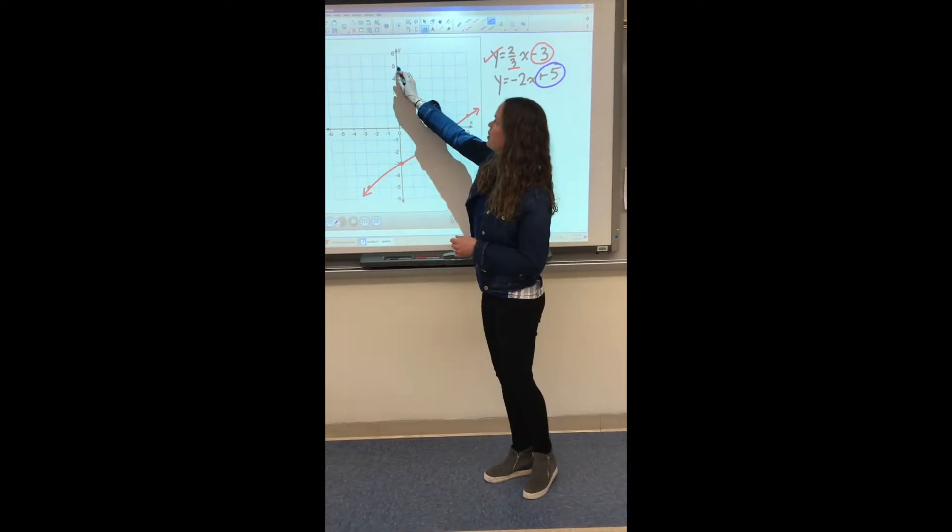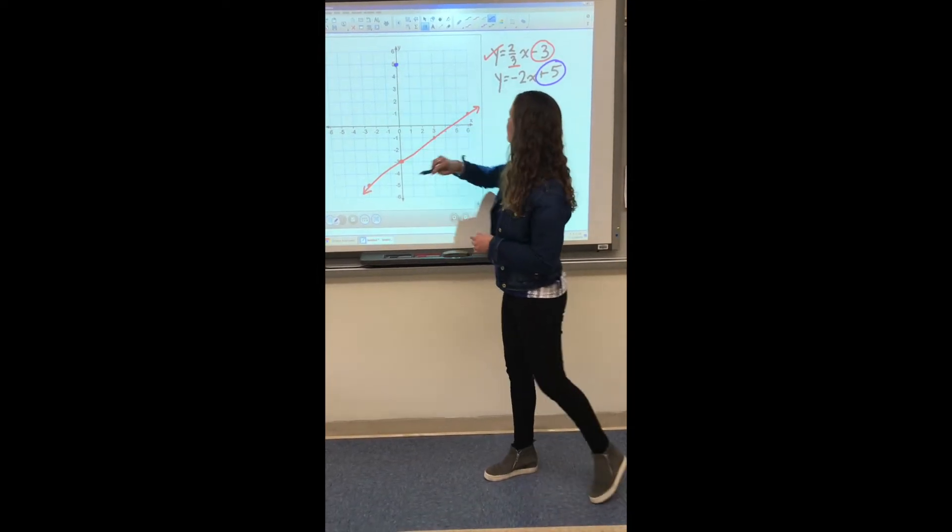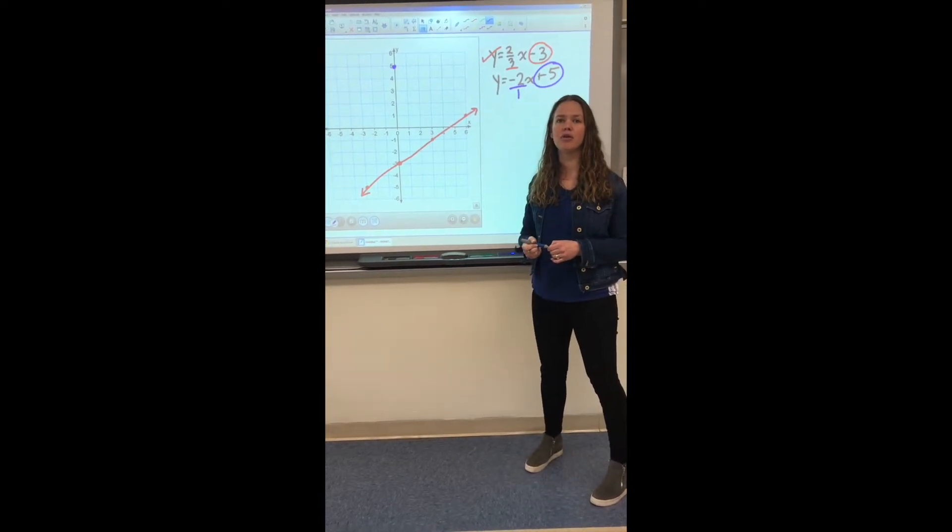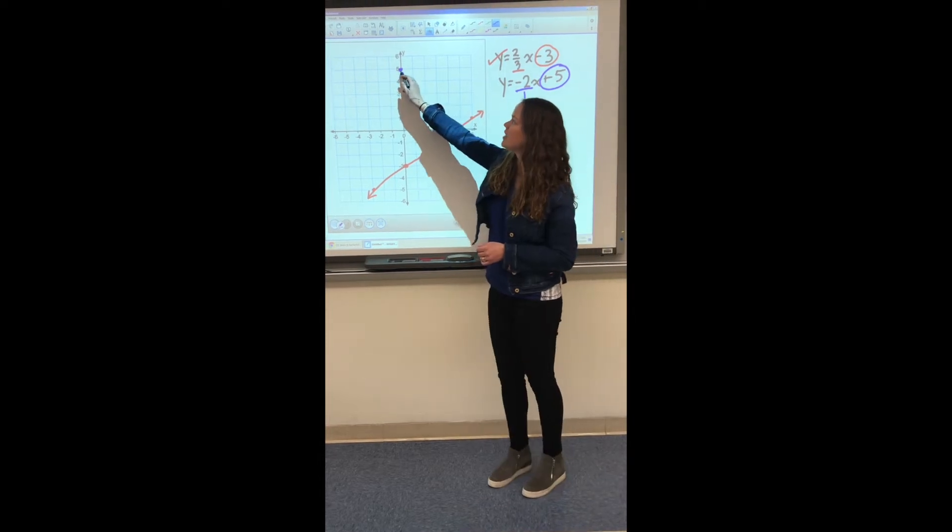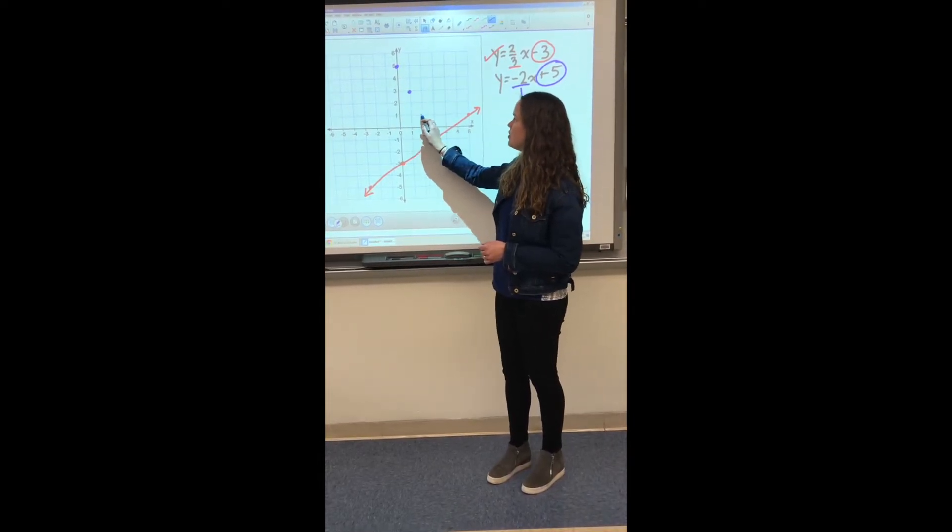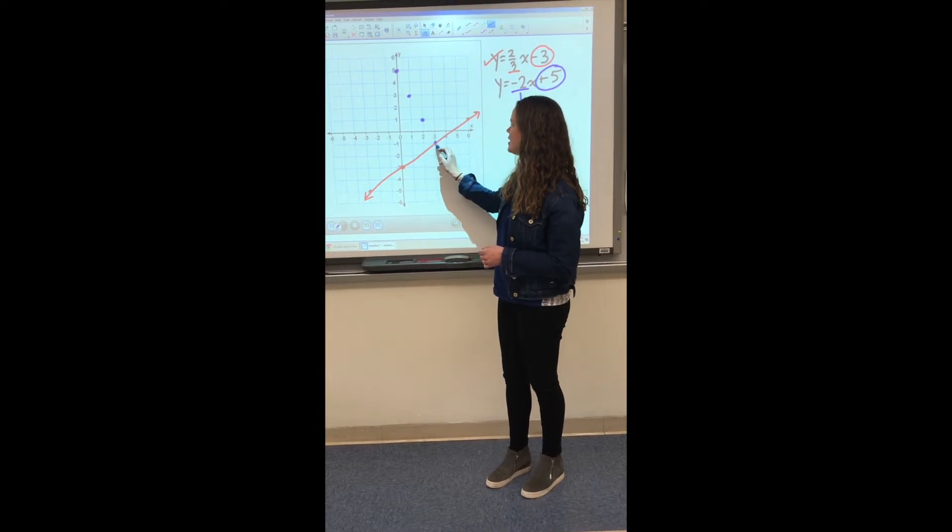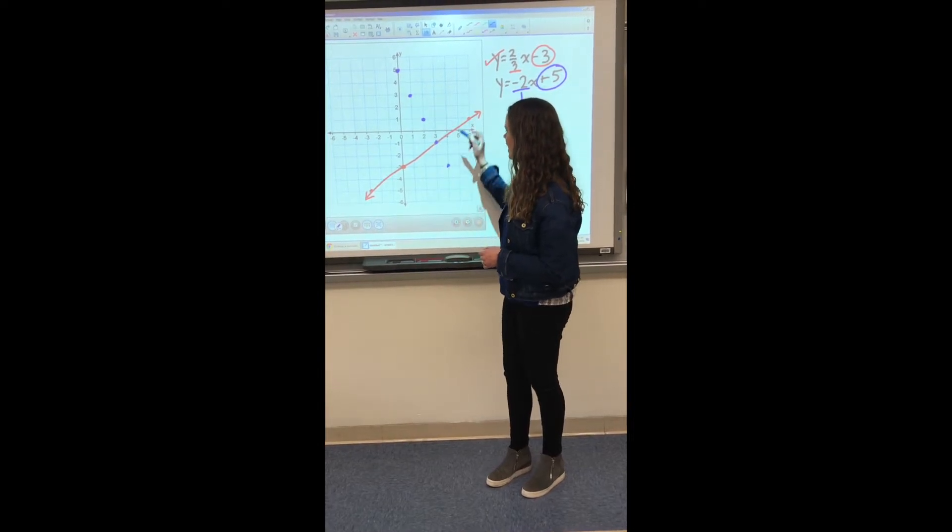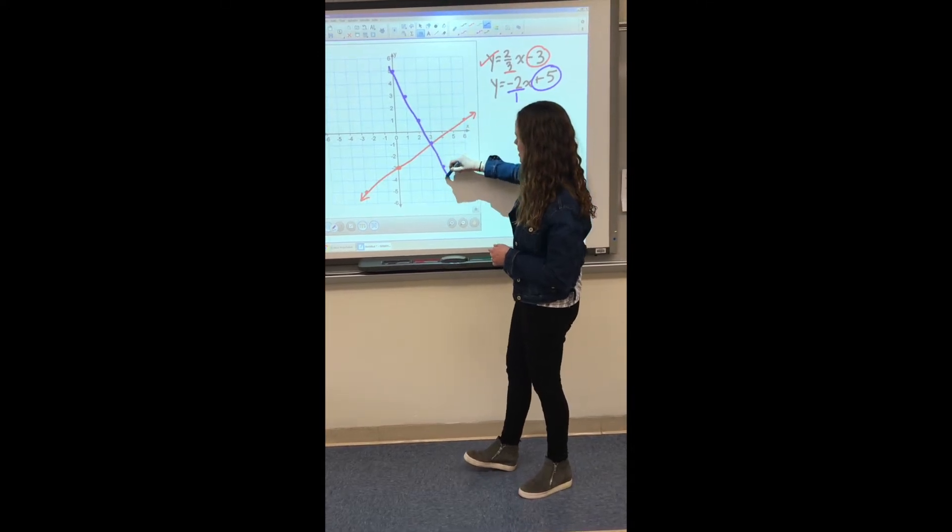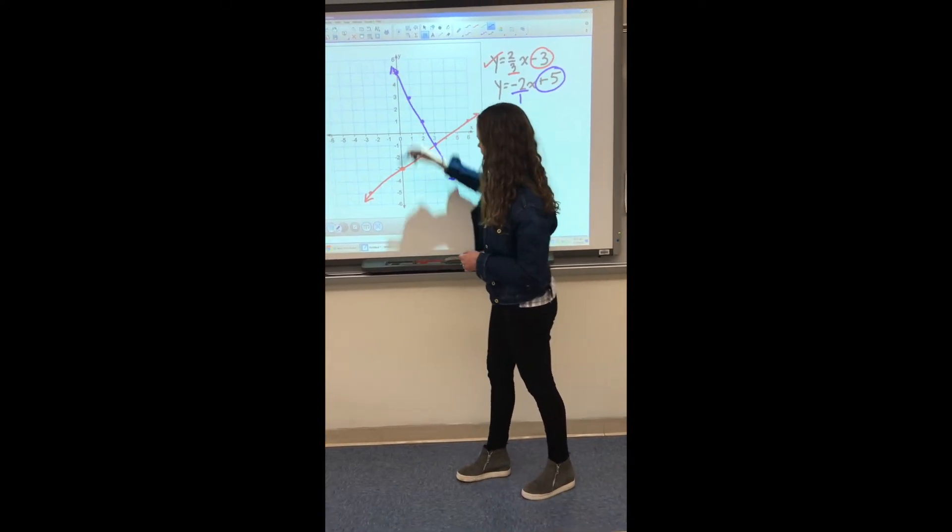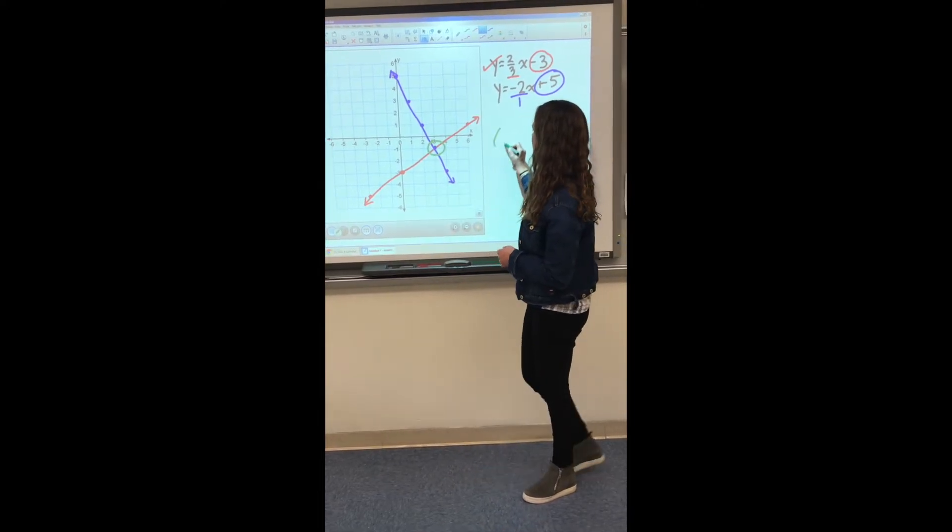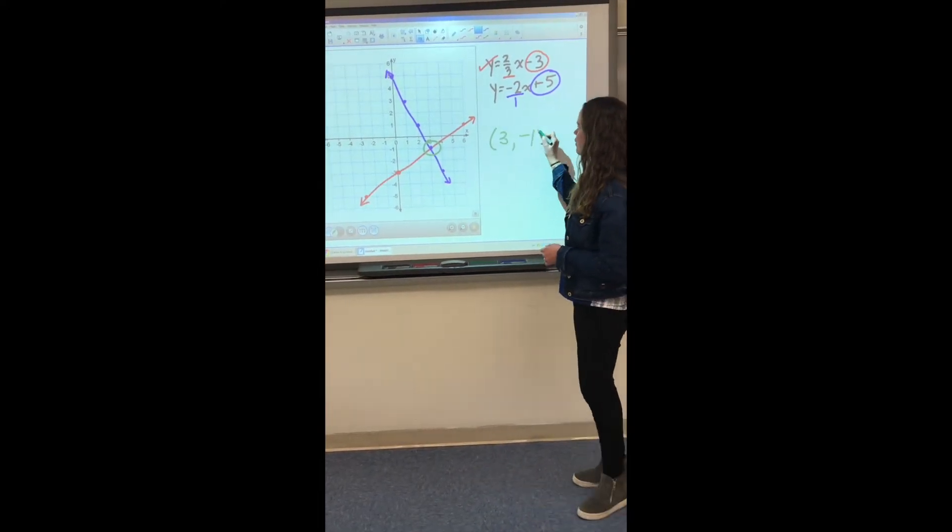So we are going to go up to plus 5 here. And our slope of negative 2, that is the same thing as saying negative 2 over 1. So from our y-intercept, we are going to go down 2 to the right 1, down 2 to the right 1, and continue the progression. And lucky us, we can see that these two lines do indeed cross, and they cross at this ordered pair right here of 3, negative 1.